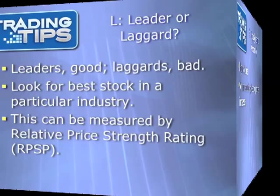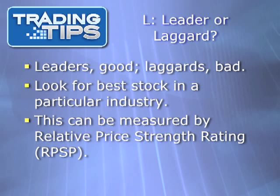L stands for Leader or Laggard. Leaders are good; laggards are bad. Normally, you want the best stock in a particular industry. One suggestion is the Relative Price Strength Rating, or RPSR, which measures the price of a stock over the past 12 months in comparison to the S&P 500 or another index. The stock with the highest RPSR in a given industry is its leader.